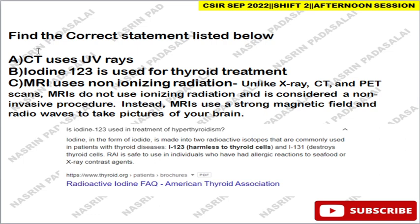Next, find the correct statement listed below. CT uses UV rays — that is the wrong option, because CT uses X-rays. Iodine-123 is used for thyroid treatment — that is absolutely correct. If you take iodine-123, it is harmless to the thyroid gland, which is why it is used for the treatment of thyroidism. If you take iodine-131, it destroys the thyroid cells. So please make sure about that.